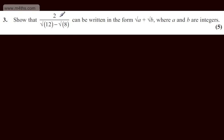In question 3, we're asked to show that 2 over the root of 12 minus the root of 8 can be written in the form root a plus root b, where a and b are integers. The question carries 5 marks.